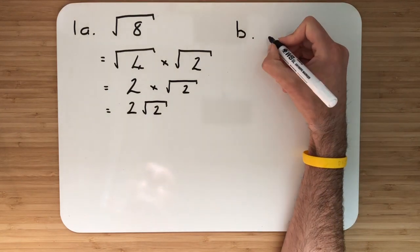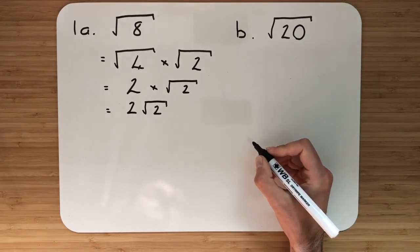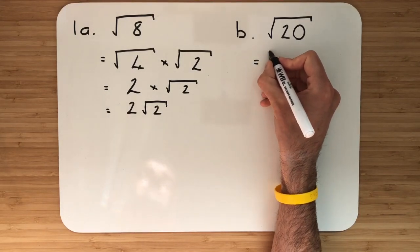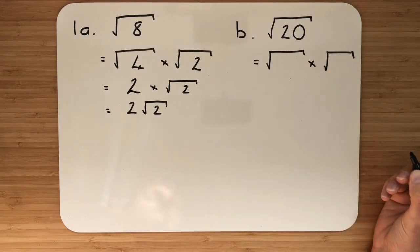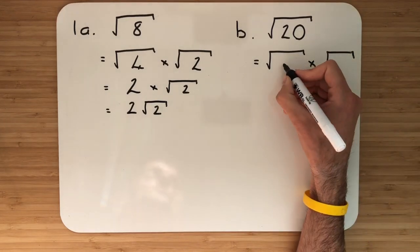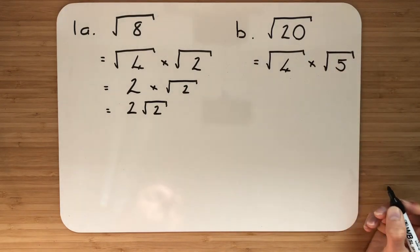Example 1b: we're starting with root 20. Same thing again — two numbers that multiply together to give me 20, one of them has to be square. Let's set out our roots. Our options here: we can go with 20 and 1, we can go with 10 and 2, we can go with 4 and 5. The only one that has a square number involved is 4 and 5, so it has to be root 4 multiplied by root 5.